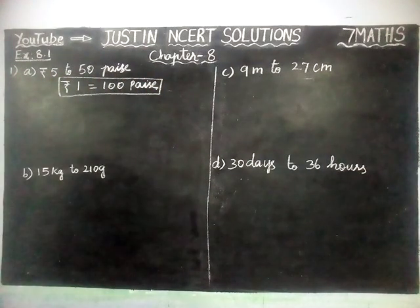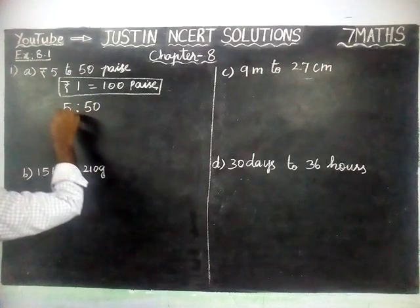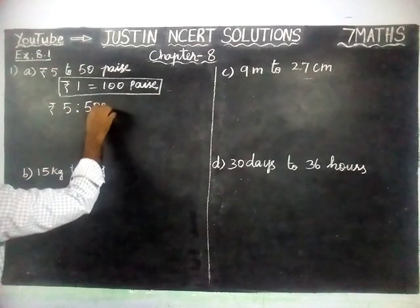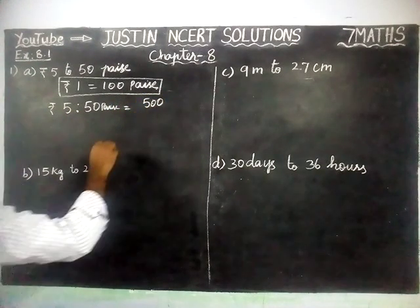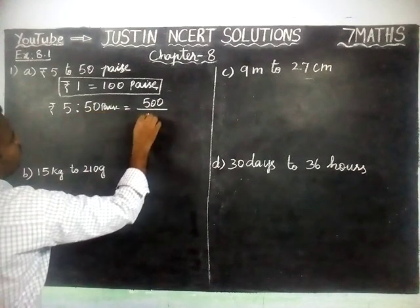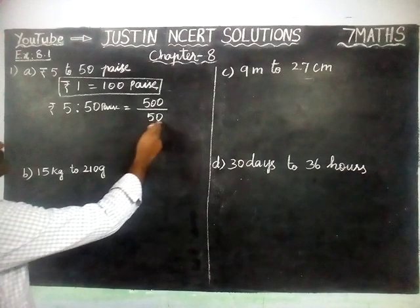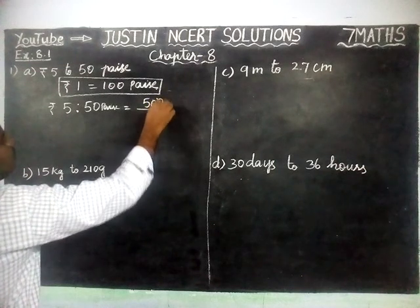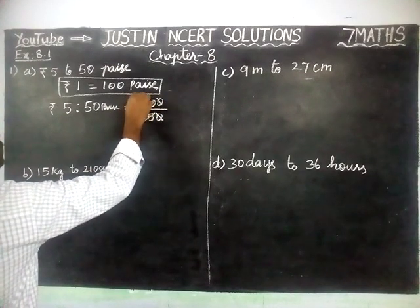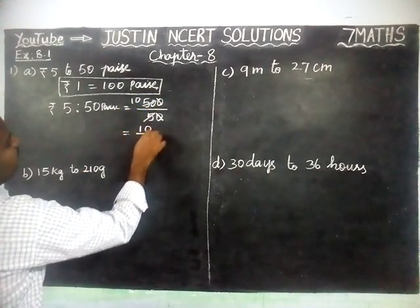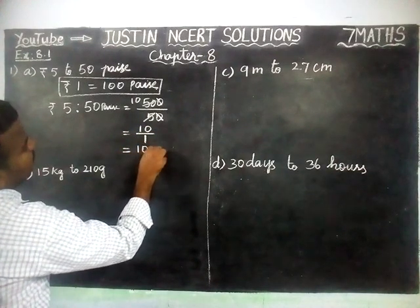So now we are going to use this. 5 rupees to 50 paise. We can write it as 5 rupees, which is 5 into 100 equal to 500, divided by 50 paise. Now we are going to simplify. The zeros cancel out, and we get 10 divided by 1. The required ratio is equal to 10 is to 1.